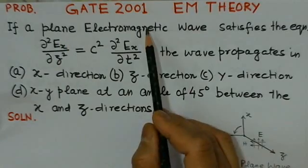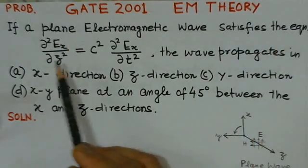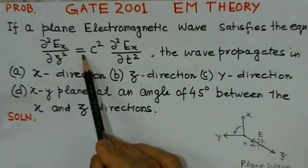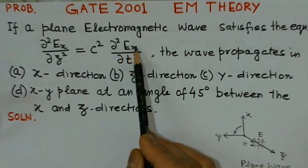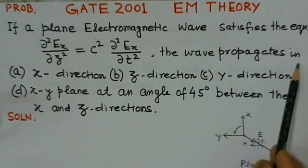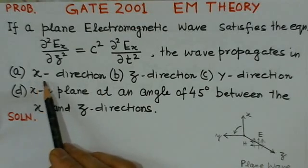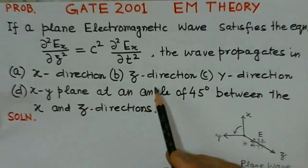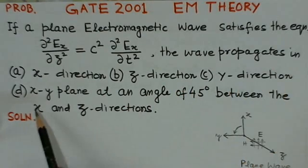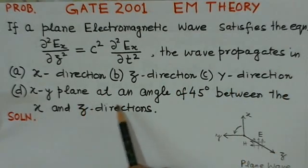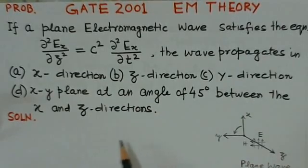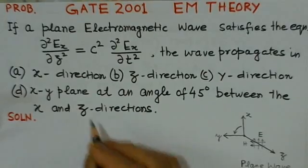The problem is stated as: if a plane Electromagnetic wave satisfies the equation delta²Ex/deltaZ² = C² · delta²Ex/deltat², the wave propagates in: A) X direction, B) Z direction, C) Y direction, and D) the XY plane at an angle of 45 degrees between the X and Z directions.